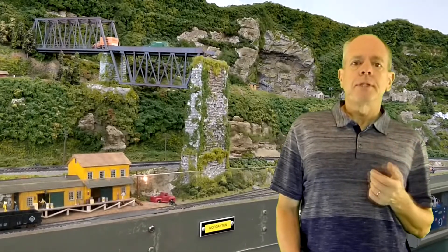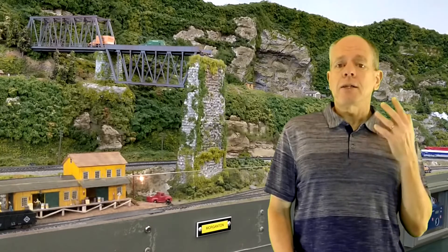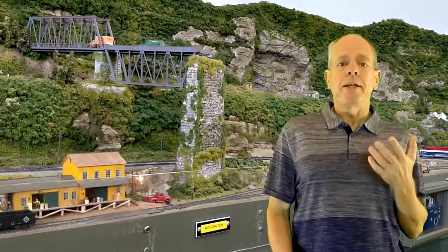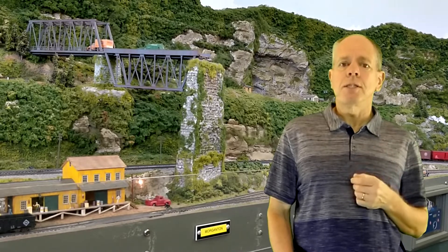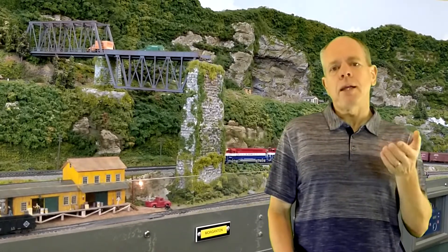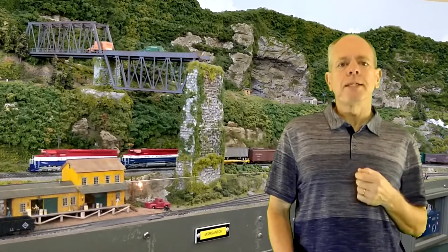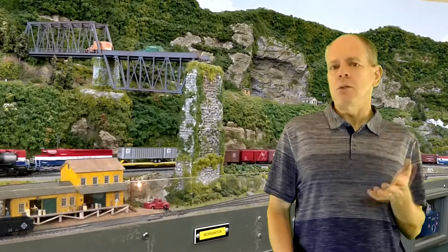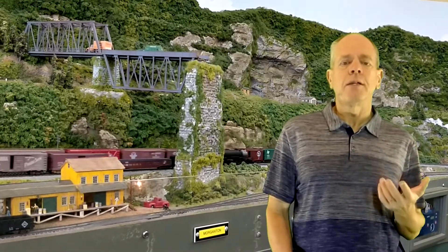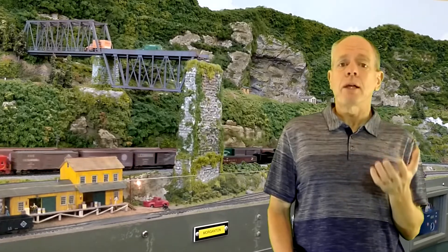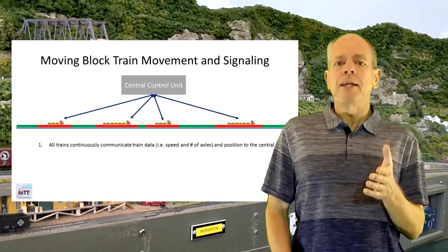These are normally also the type of systems model railroaders have in mind when they say they want a signaling system on the layout. However, that does not mean that ABS and APB is the end of the development. Even though the number of trains per hour has been greatly improved, there is still some inefficiency to be improved. The main problem is that the block length is constant — in most cases approximately 2 miles. Constant block length leads to constant minimum distance between trains, even though some lighter or shorter trains may be more agile and could be safely operated with a shorter safety distance. The next improvement is to make the block length variable, so that every train could have an individual block length depending on the characteristics of the train.